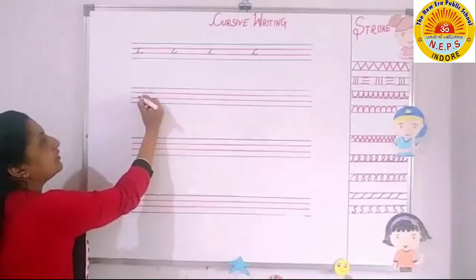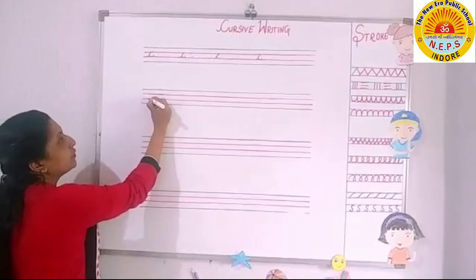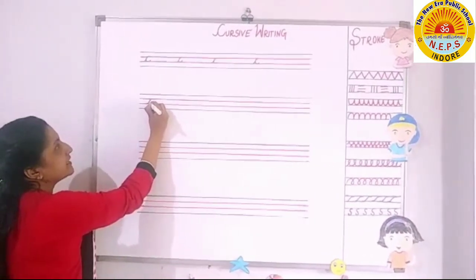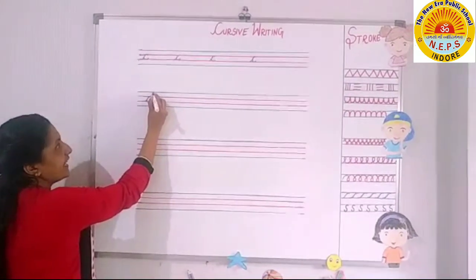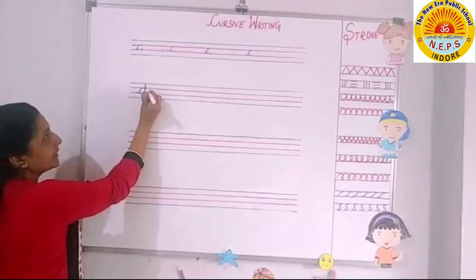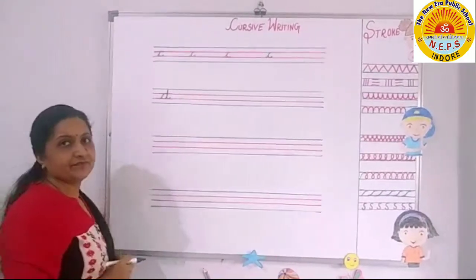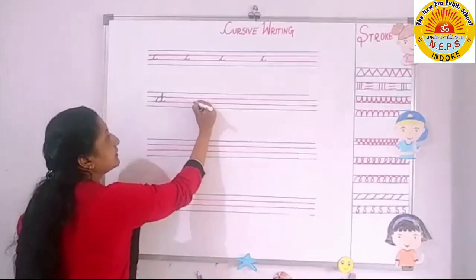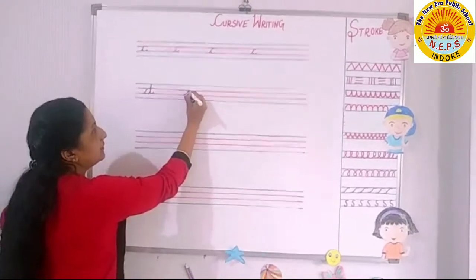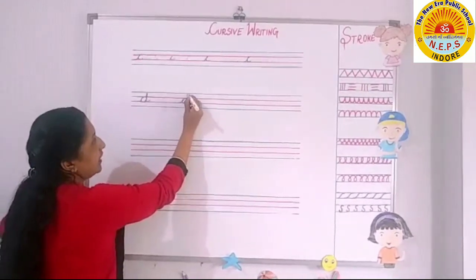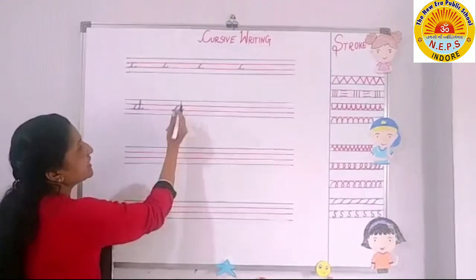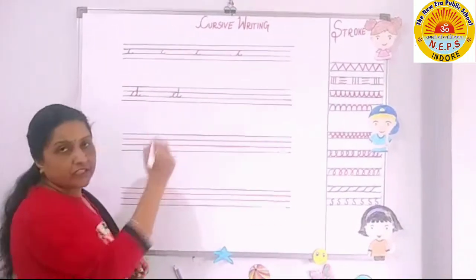Starting from the lower midi line to upper midi line, make a curve like C. Then a standing line upwards, then downwards. Make a tail. Make a curve — up, down, upwards. Make a standing line downwards. Make a small tail and a small curve.